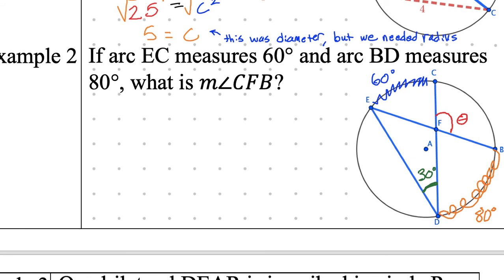What's another inscribed angle we can use? Yes, Josie — BED. That angle is 40 degrees. Can someone explain how Josie got 40 degrees? Half of 80 — because that was the arc that the inscribed angle intersects, so half of 80 gives us the angle of 40 degrees. Good. So we're trying to find angle CFB and we have these angles out here — we're just two steps away.